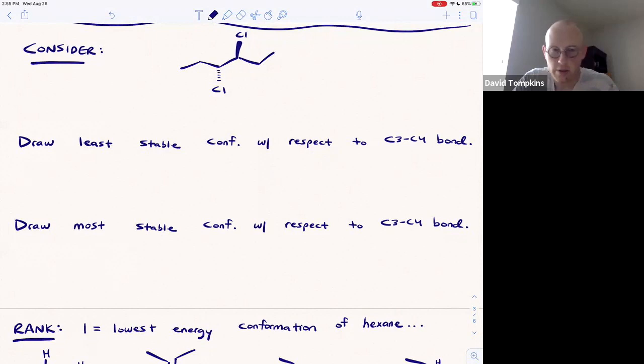Consider this mesocompound of 3,4-dichlorohexane. It's six carbons long, but we are going to focus here on the central carbon-carbon bond—you can call this carbon-3 and the other carbon-4.